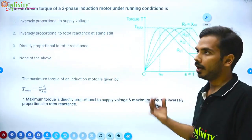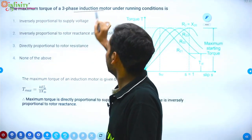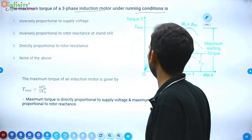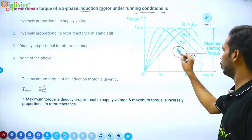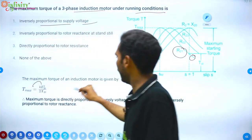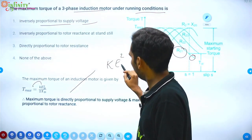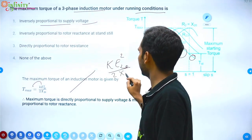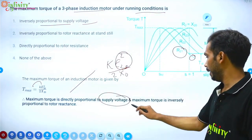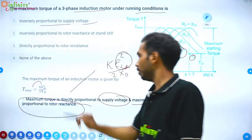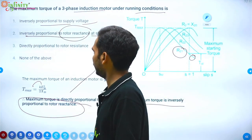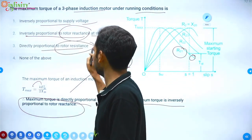Question: Maximum torque of a three-phase induction motor under running condition. The maximum torque is not proportional to R2 alone. Looking at the formula, maximum torque is directly proportional to the square of supply voltage, and inversely proportional to rotor reactance X at standstill. It is directly proportional to rotor resistance — so using X here is incorrect. Note: maximum torque under running condition is independent of rotor resistance.